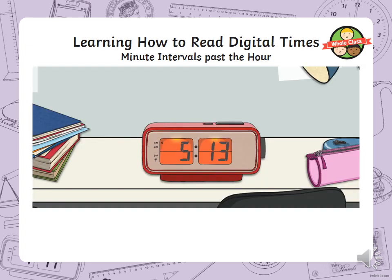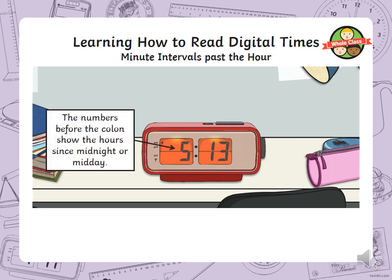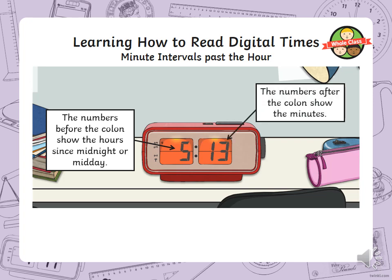So, learning how to read digital times — minutes intervals past the hour. The numbers before the colon show the hours since midnight or mid-day. The numbers after the colon show the minutes. On this clock, the hour is 5 and 13 minutes have passed since the hour. Digital clocks are clocks that we usually see in phones — pause the video and tell me where else you see a digital clock.